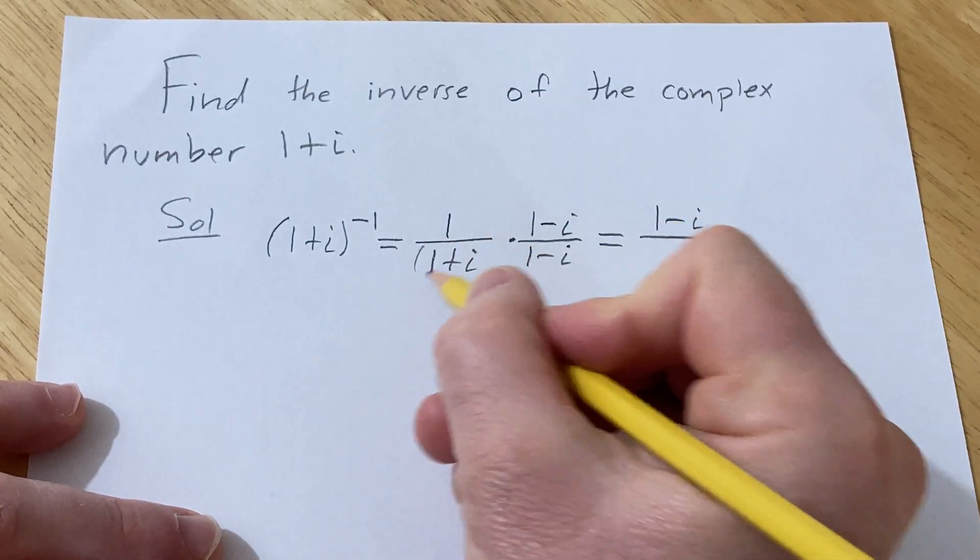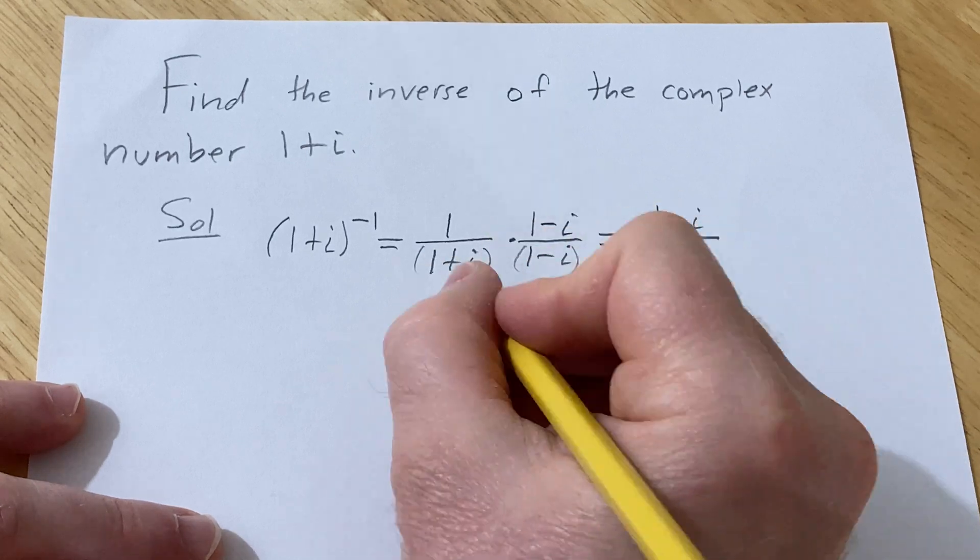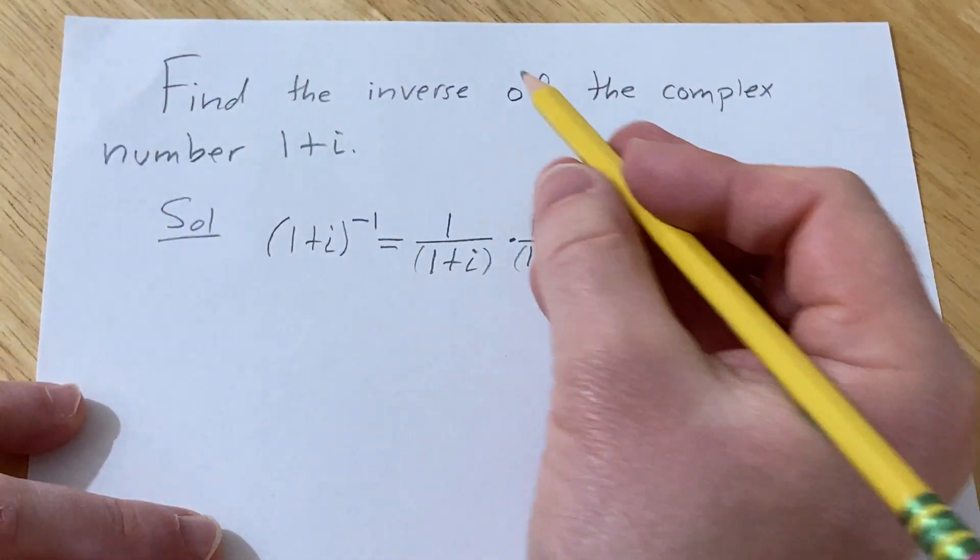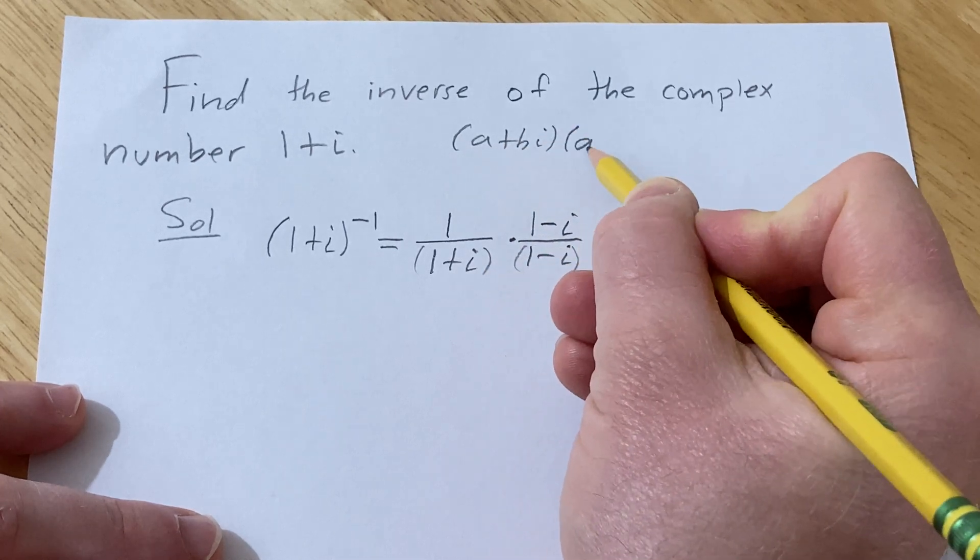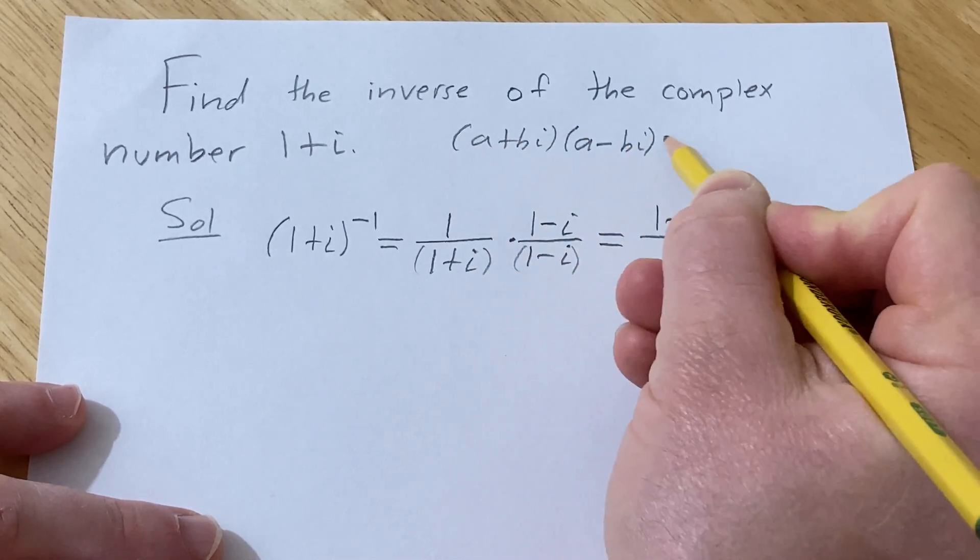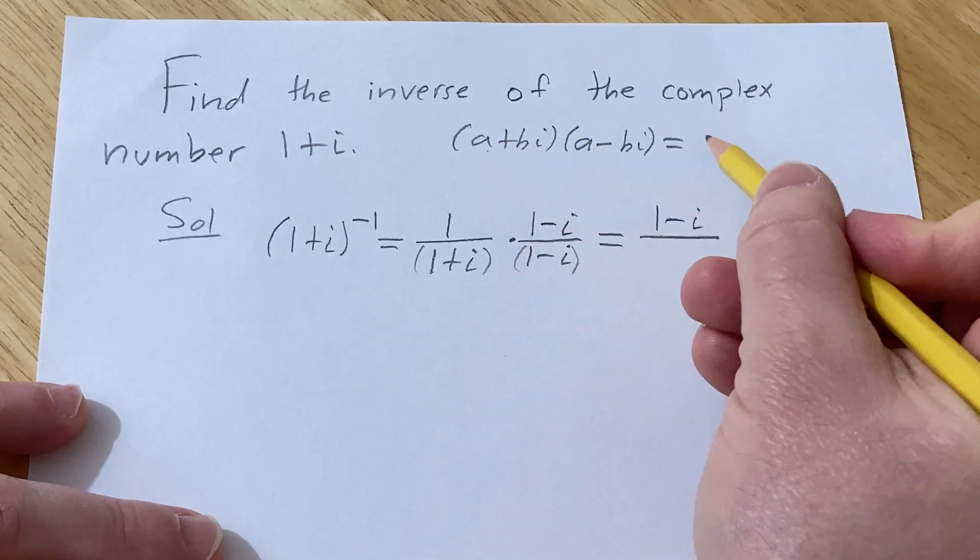And then this times this, you can multiply it out, or there's a formula which is worth knowing. If you have a plus bi times a minus bi, you square the a and you square the b.